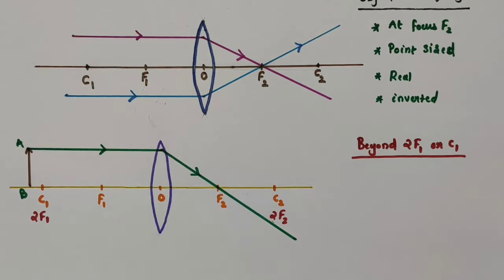Now let us discuss the fourth ray diagram. Here the object is kept between C1 and F1, or between F1 and 2F1. This is the object — I am naming it AB. To draw the ray diagram, I consider a ray of light parallel to the principal axis emanating from the top arrow part of the object — this is the first incident ray. After refraction, the ray will pass through F2. Now I want to consider one more ray emanating from the same part, passing through the optical center.